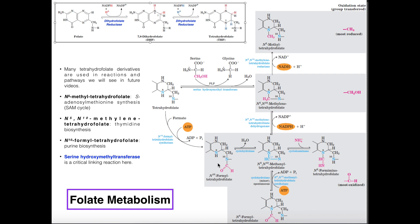N10-formyl tetrahydrofolate is directly usable in quite a few reactions, but we can process it further into some less common metabolites. There's a reversible enzyme called cyclohydrolase that can convert N10-formyl tetrahydrofolate into N5-N10-methanyl tetrahydrofolate. Notice the subtle name difference — this is methanyl, while the one we see further up is methylene. Methanyl is really more of an intermediate; we're not actually going to use it directly.